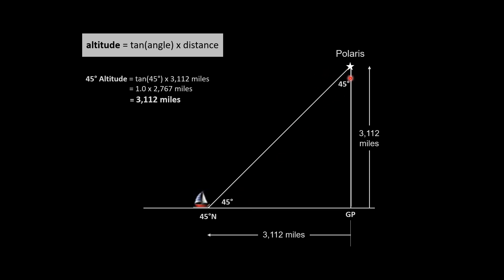And since the observed angle is 45 degrees to Polaris, we know the angle up here is also 45 degrees. That makes this an isosceles triangle that has two equal sides. Therefore, we know that Polaris is about 3,112 miles above the flat Earth.